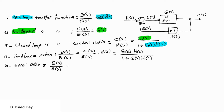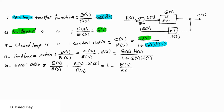The fifth definition is the error ratio, which is the error over the input, or E over R. The error signal is the output of the summing point, so this can be replaced by R minus B. Using the definition for the feedback ratio, we can arrive at E over R equals 1 over 1 plus GH.